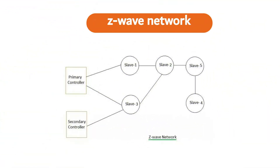Z-Wave components. The components of Z-Wave include controllers, slave nodes, home ID, node ID and routing tables. A controller is a unit that has the ability to compile a routing table of the network and can calculate a route to the different nodes. There are two types of controllers: primary controller and secondary controller.